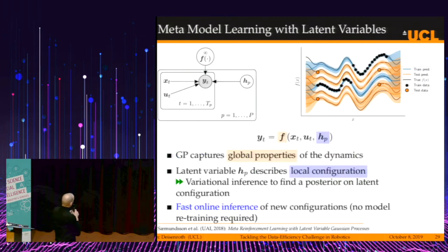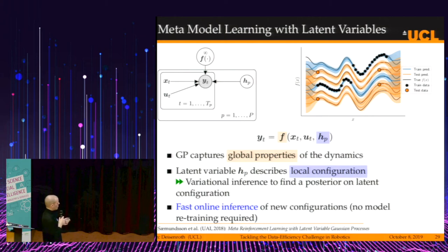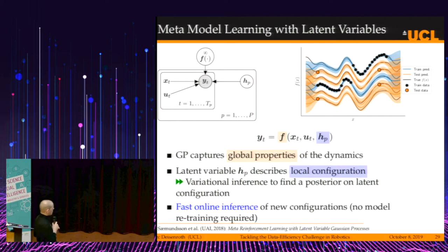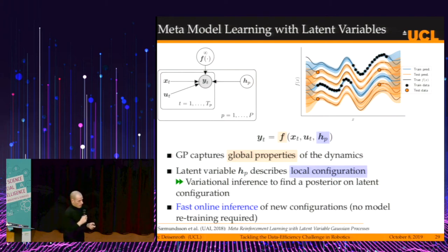In the graphical model, the dynamics are: y is a function of x, u (control signal), and an additional variable h. Previously we looked only at a function of state and control signal. The Gaussian process f captures global properties of the dynamics, and the latent variable h describes the local configuration. We can use variational inference to find a posterior distribution on the latent configuration.